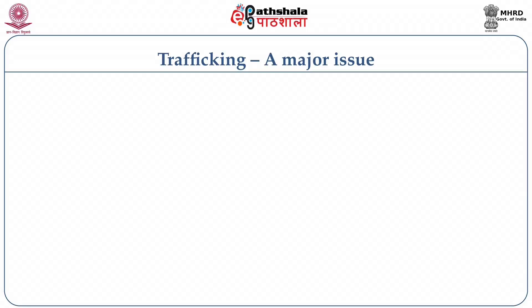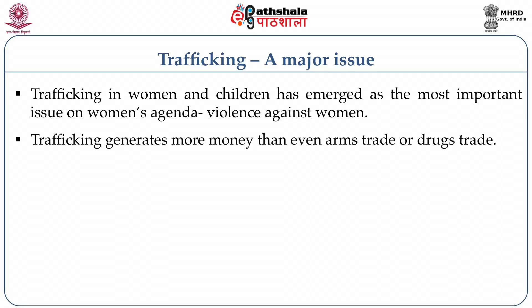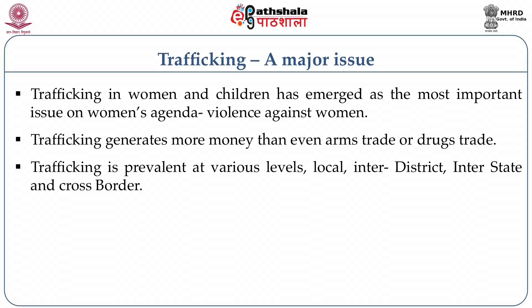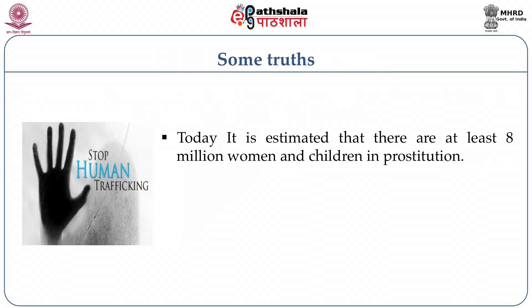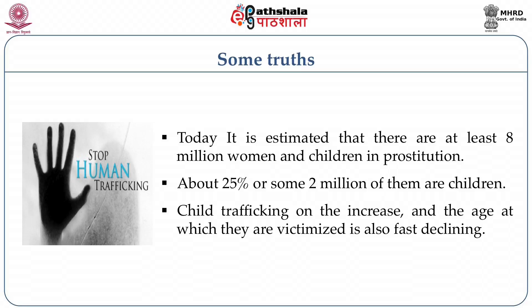Another major issue of contemporary India is the question of trafficking, which has emerged as one of the very important issues on women's agenda of violence against women. Today, trafficking is generating money next to arms trade and drugs trade. It is prevalent at various levels — local, inter-district, inter-state, and cross-border. Statistics show that there are at least 8 million women and children in prostitution, and about 25% of these are children. Child trafficking is on the increase and the age at which they are being victimized is also fast declining.